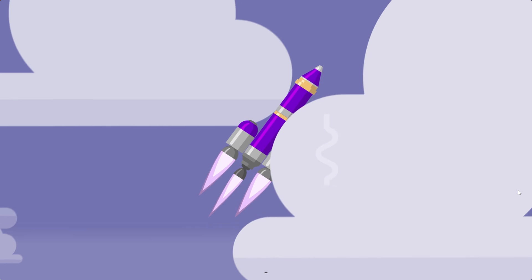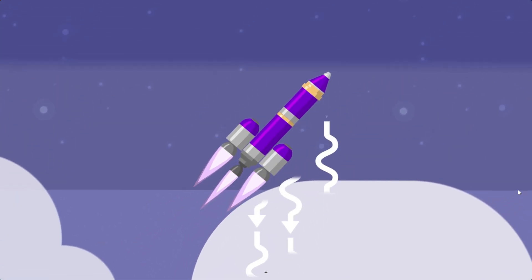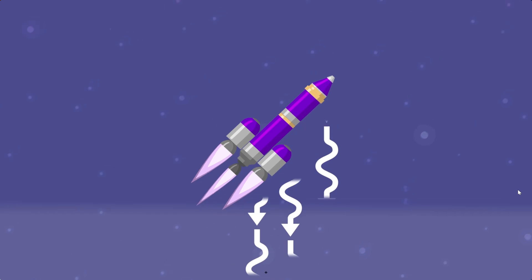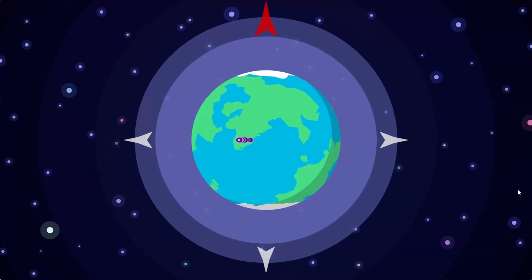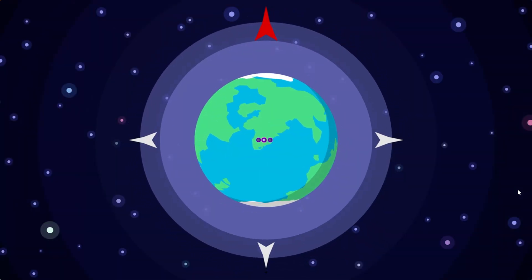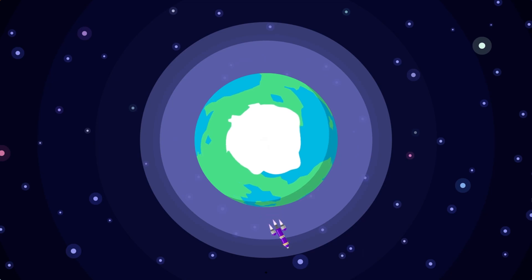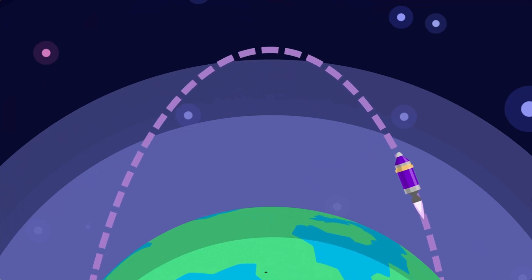This maneuver, called a gravity turn, uses the planet's gravity to turn the ship and reduces the amount of fuel needed to achieve a stable orbit. When launching near the equator, your gravity turn should point toward the east since your vehicle gets a free boost from the planet's rotation. Thanks, planet!